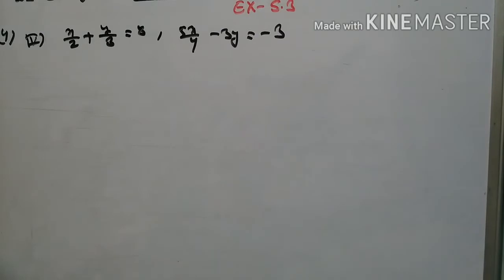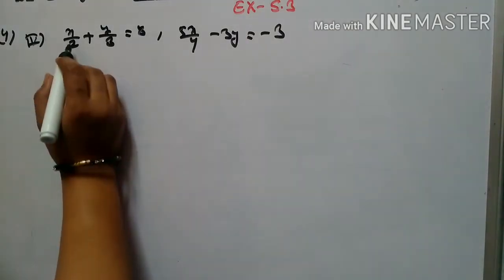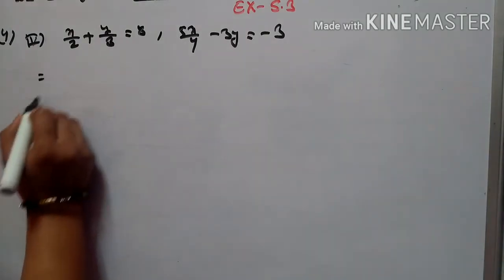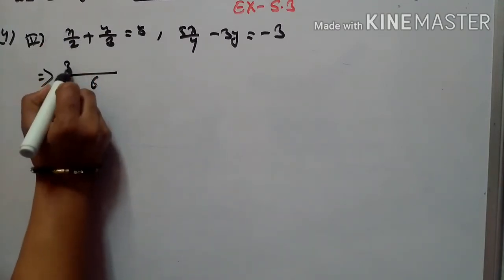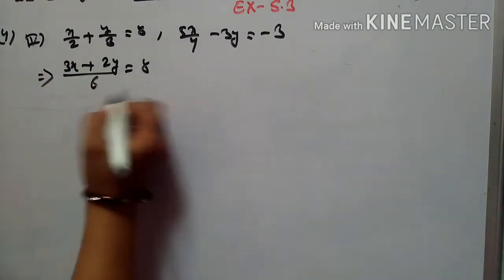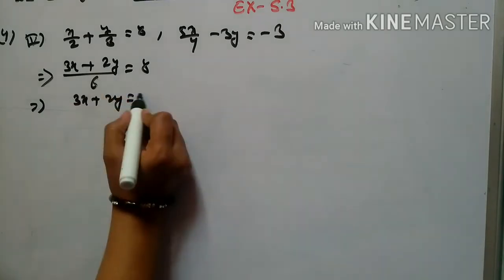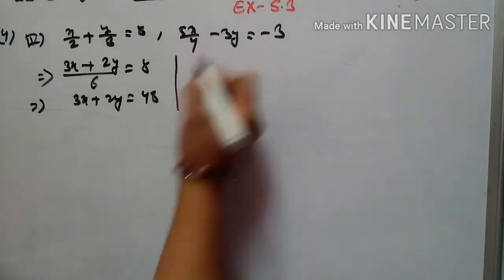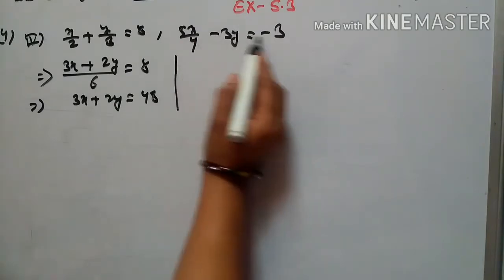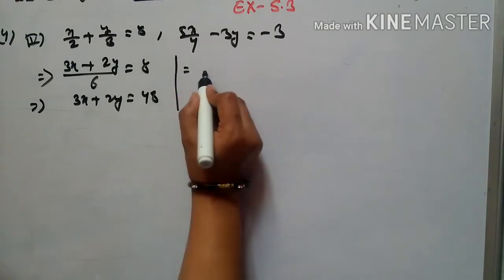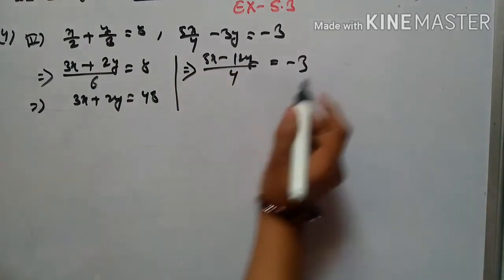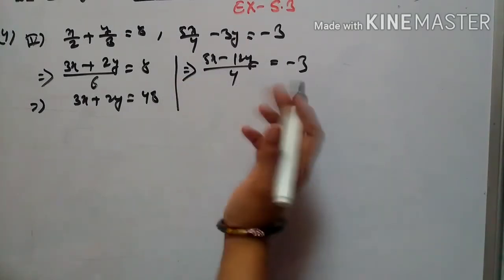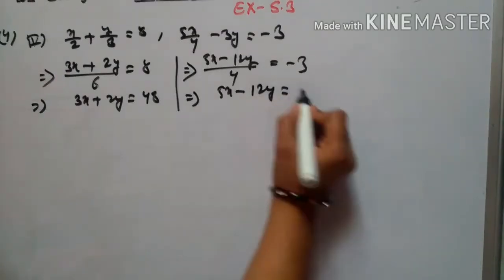Now we move to question number 4 (fractional form). The equations are x/2 + y/3 = 8 and x/4 - y/... . We simplify by taking LCM. For the first equation, LCM of 2 and 3 is 6, giving us 3x + 2y = 48. For the second equation, after multiplying through, we get 5x - 12y = -12.